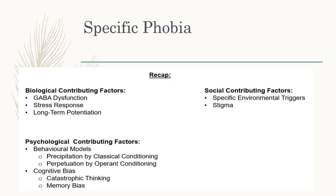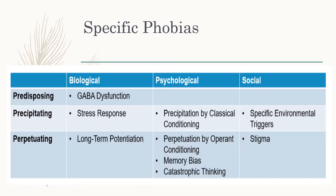Just to recap — these are all the different features; you may want to pause and put this into your notes. The phobia table with the 4P Factor Model — remember the fourth one is the protective factors — is different from the one for mental health. You need to have different ones and remember them. Make sure you know that this table is for phobias and the other one is for mental health.